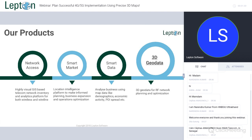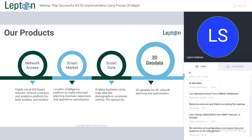Before starting to discuss about 3D Geo data, I would like to give you a brief idea about the various Leptin products available apart from the Geo data. The first one is Network Access — a web-based telecom network inventory and planning solution. We have different modules to capture your entire journey from design to cash, like planning and designing, network rollout, inventory, and O&M — that is, operation and maintenance.